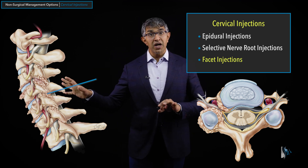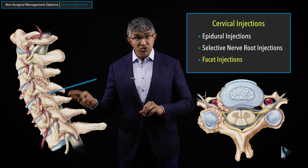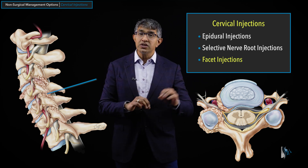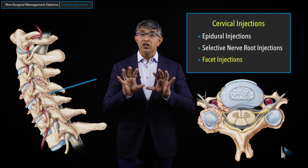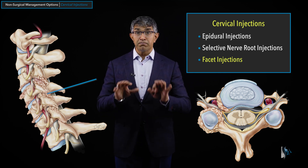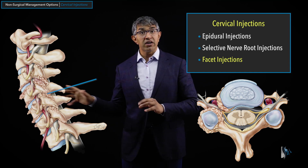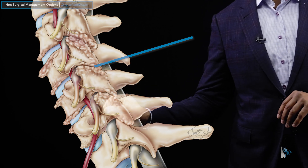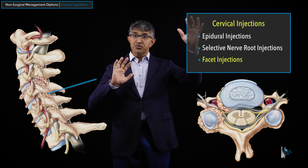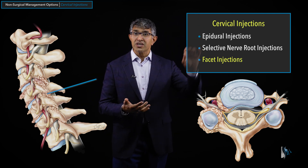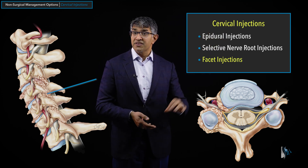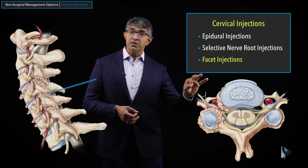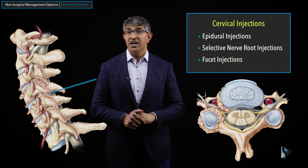Often when they do a medial branch block or facet injection, it is a diagnostic tool in advance of something called a rhizotomy or radiofrequency ablation — which isn't strictly an injection, but going in and burning that nerve. Patients get alarmed when they hear 'burning the nerve,' but that little twig is not the main nerve like C5 or C6 — it's like a little twig on a tree, not the trunk. It's that small branch going right to the joint. Facet injections and radiofrequency ablations target this area and are much more effective for neck pain.